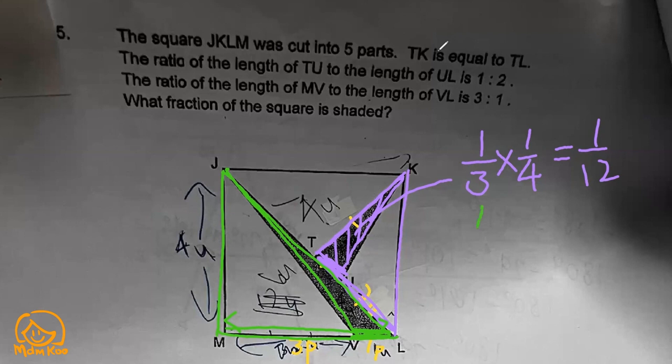Finally, I can find the shaded part. The shaded part is just 1/12 plus 1/8, which will give 5/24. So that is the answer to this question.